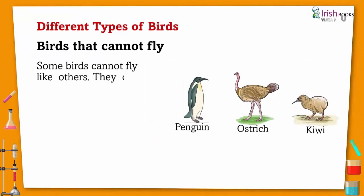Some birds cannot fly like others. They can only walk or run, like penguin, ostrich, kiwi.